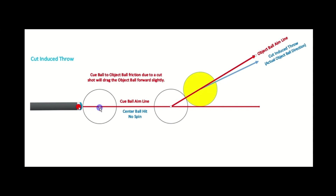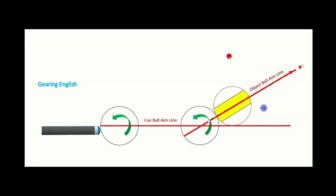For a center line hit on a 30-degree shot, whether you're at 100% topspin, stun, or 50% topspin plus and minus, you're always getting cut-induced throw. So this is about the spot you want to aim for gearing English — whether hitting at the top, equator, or with draw. This is looking at it from above.